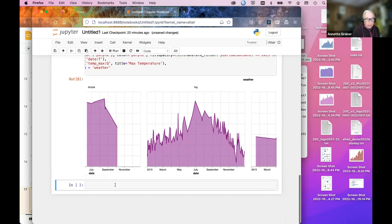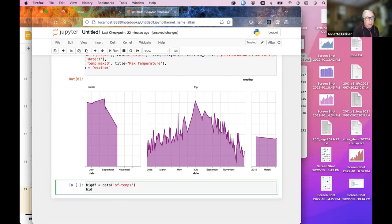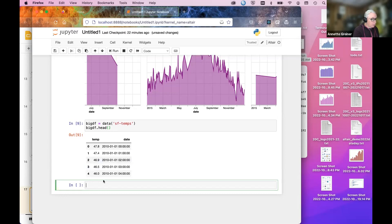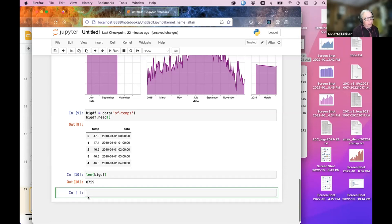So now I want to show you one other thing that makes this work for larger data sets, because I think this group would appreciate that. So let's see, I'm going to use a big data frame. And this one is a data set called SF temps. I'm going to take a look at the shape of that. This is just temperature data. But how big is this?